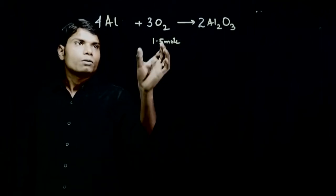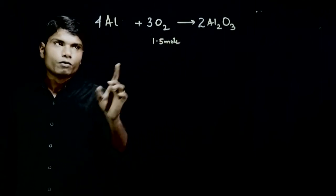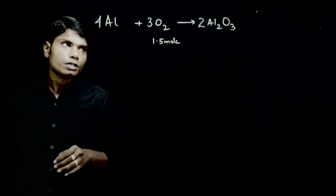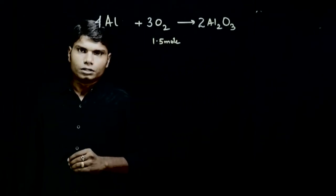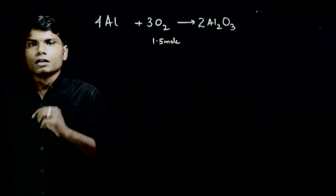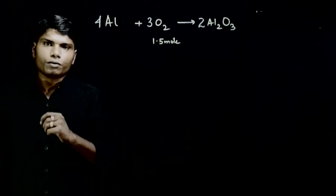This question involves 1.5 moles of oxygen combining with aluminum to give Al2O3. The question is: how much aluminum is required to produce Al2O3?